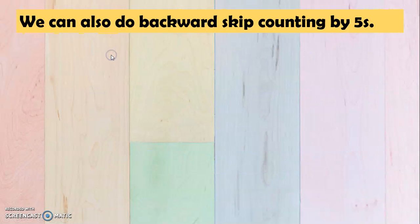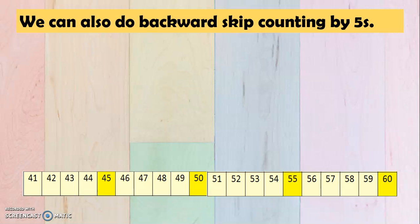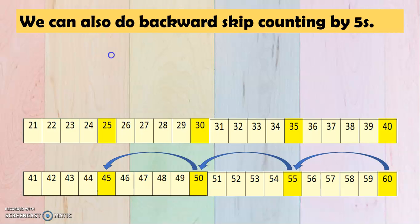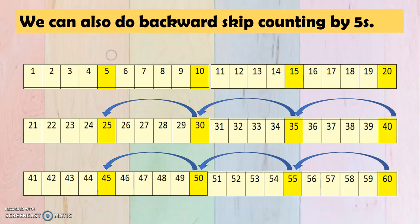Now we can also do backwards skip counting by 5s. So we may start with 60, and then to 55, 50, 45, 40, 35, 30, 25, 20, 15, 10, and then 5.